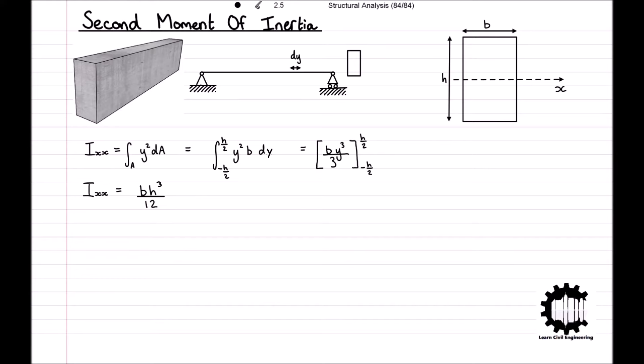Just like with the first moment of area, the second moment of inertia has the property where the second moment of inertia for multiple compound shapes can be added and subtracted to determine the second moment of inertia for a complex shape. However, this can only be done if all the second moments of inertia are relative to the same axis.